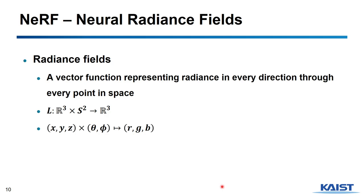Let's review the radiance field concept. As you learned from the render equation, radiance means the amount of light at a specific position in a specific direction. A radiance field is a function representing the radiance at every direction and every point in space. It can be represented as a five-dimensional input: the position x, y, z and the direction theta and phi, and the output will be the RGB of the light.